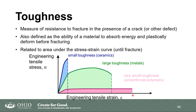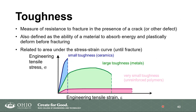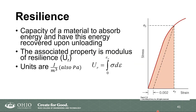The modulus of resilience relates to how much energy a material can absorb and then release once the load is removed. It is related to toughness, but while toughness covers the entire region up to fracture, resilience covers only the region up until plastic deformation begins. Once plastic deformation occurs, that energy cannot be recovered because the material doesn't return to its original dimensions.